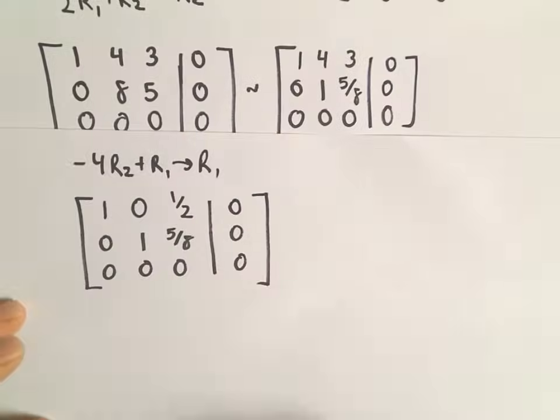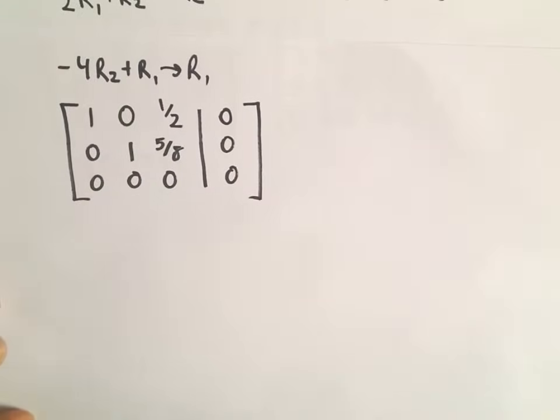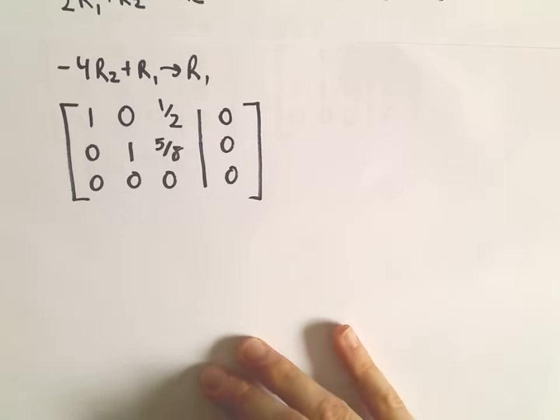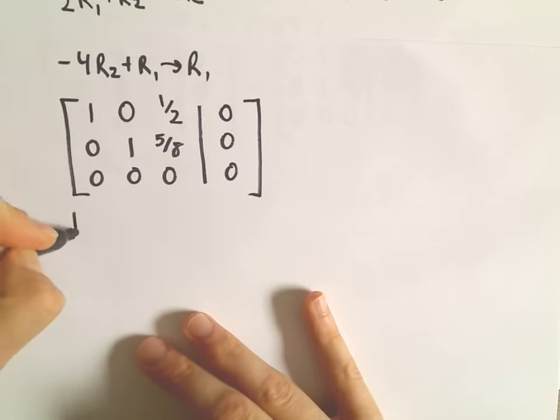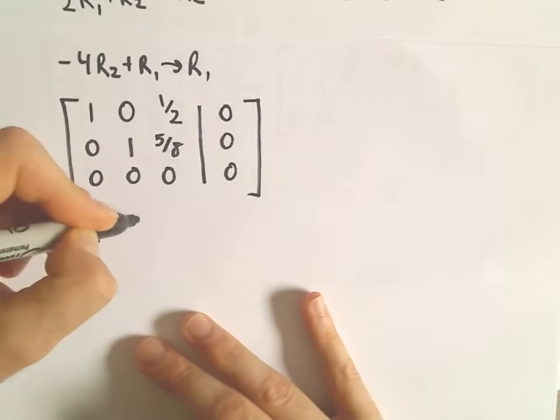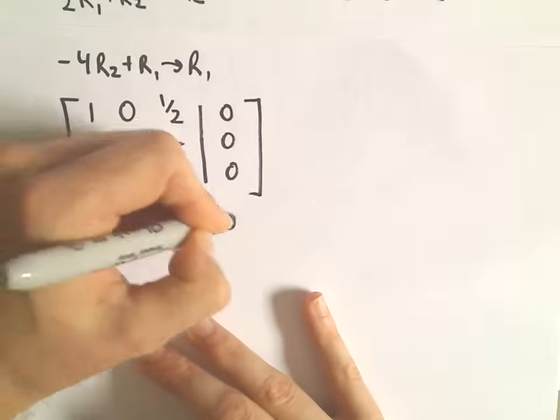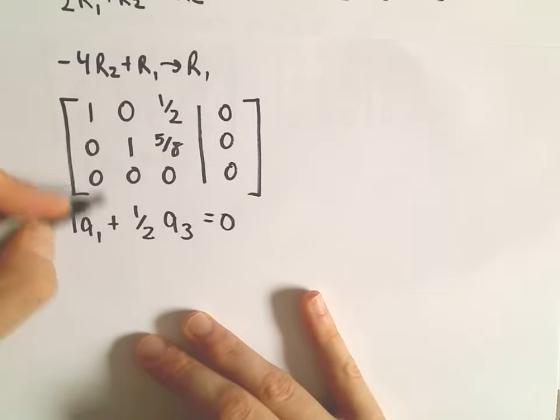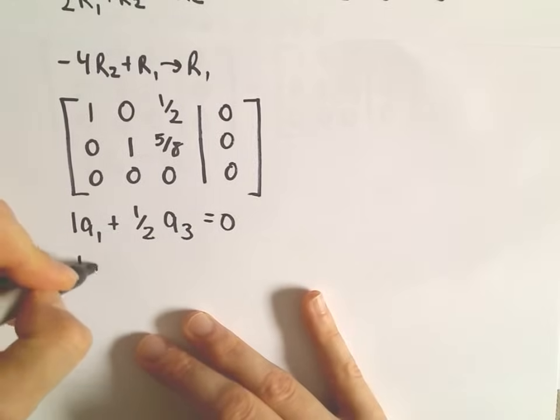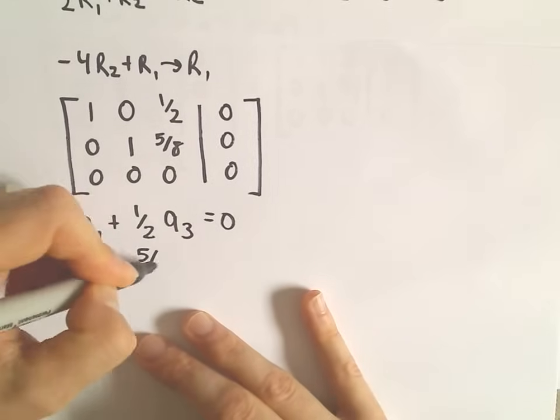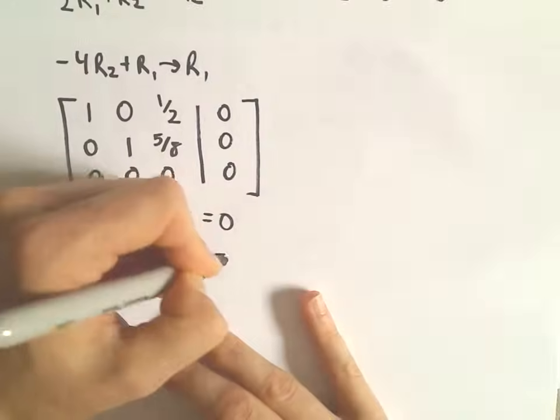And now, to me, that looks like a pretty good form. So notice, again, you can think about this correspondingly as being the system of equations. 1 a sub 1 plus 1 half of a sub 3 equals 0. We have 0 a1. We've got 1 a sub 2 plus 5 8ths a sub 3 equals 0.